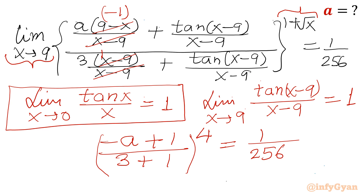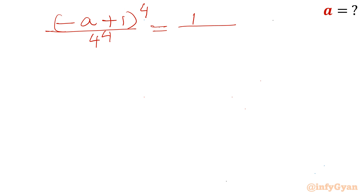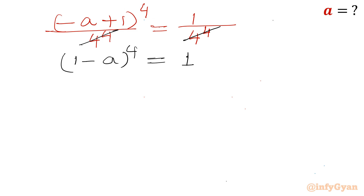So I can write (−a + 1) over (3 + 1) raised to the power 4 equals 1/256. That is (1 − a)⁴ over 4⁴ equals 1/256. Since 4⁴ = 256, we can cancel denominators from both sides, giving (1 − a)⁴ = 1. So (1 − a)⁴ − 1 = 0.